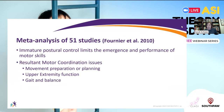Fournier and colleagues found in a meta-analysis of 51 studies that immature postural control was documented as an underlying impairment with resultant motor coordination issues in individuals on the autism spectrum, with decreased movement preparation and planning, impaired upper extremity function, and problems with gait and balance.